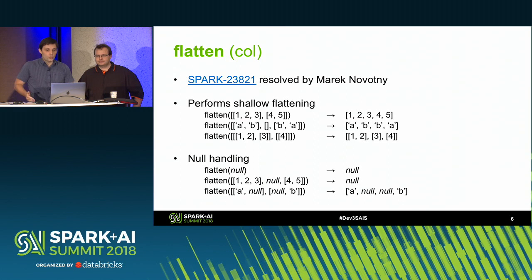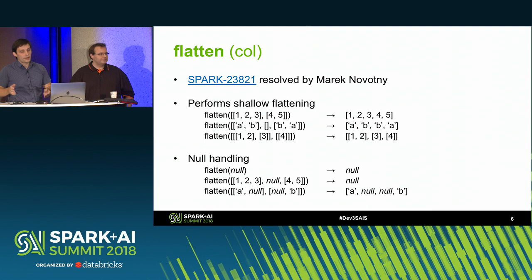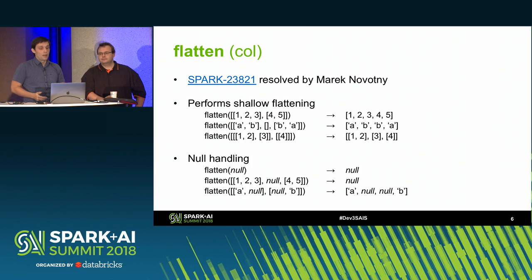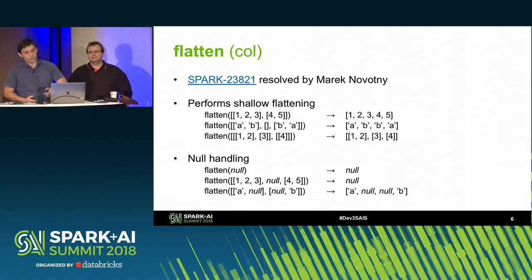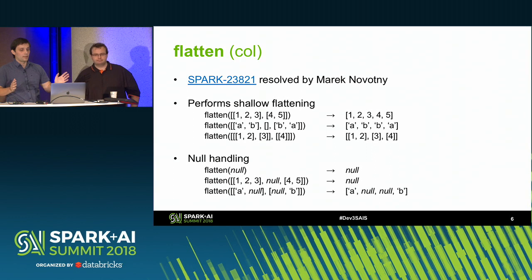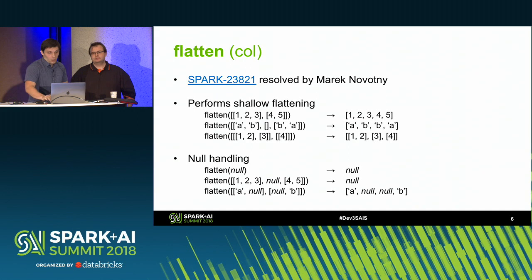The next function is flatten — a purely new function performing shallow flattening. In other words, if you have a column of arrays of arrays of arrays, it removes just one level of nesting — it concatenates the elements of the root array. Null handling works similarly to concatenation: if the input to the flattening function is null, the result is null. If the root array contains a null, the result is also null. But if nulls occur on lower layers of nesting, they are treated as regular array elements.